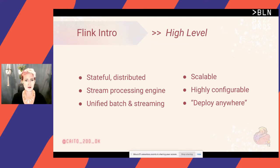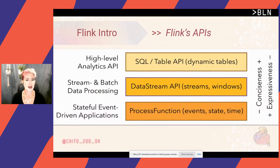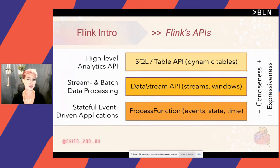Specifically, it can be run on pretty much any common cluster environment — Hadoop, Yarn, Mesos, Kubernetes — and can also be run as a standalone cluster. Its timing and state features are really where it shines, allowing that extra flexibility for what kinds of applications it can be run on. As part of this ecosystem, Flink has a series of APIs. The higher level the API, the more concise but the less expressive, and vice versa.